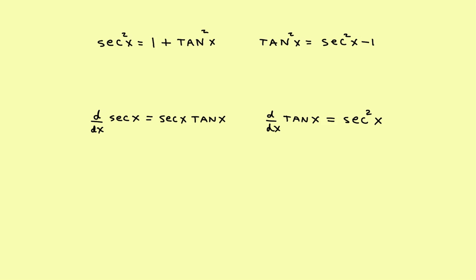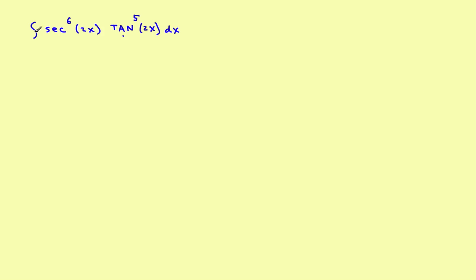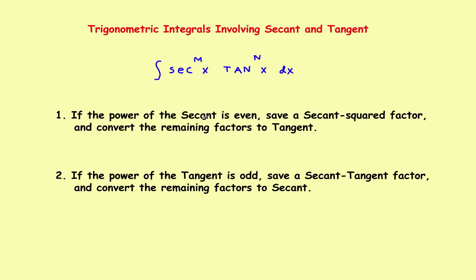Let's take a look at an example. We'll work one where we have secant to the sixth times tangent to the fifth. The secant is to an even power, so looking back at the rules: if the secant is to an even power, save a secant squared factor off to the side and change everything else to tangent.